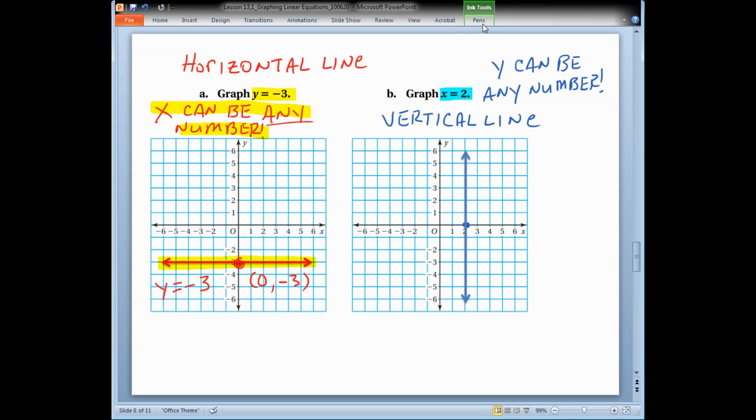Vertical. Well, y can be any number. Y can be any number. Right. Y can be any number. I just want x to equal 2. So when I pick any coordinate on this line, the x-coordinate will be 2. That's pretty straightforward, right?